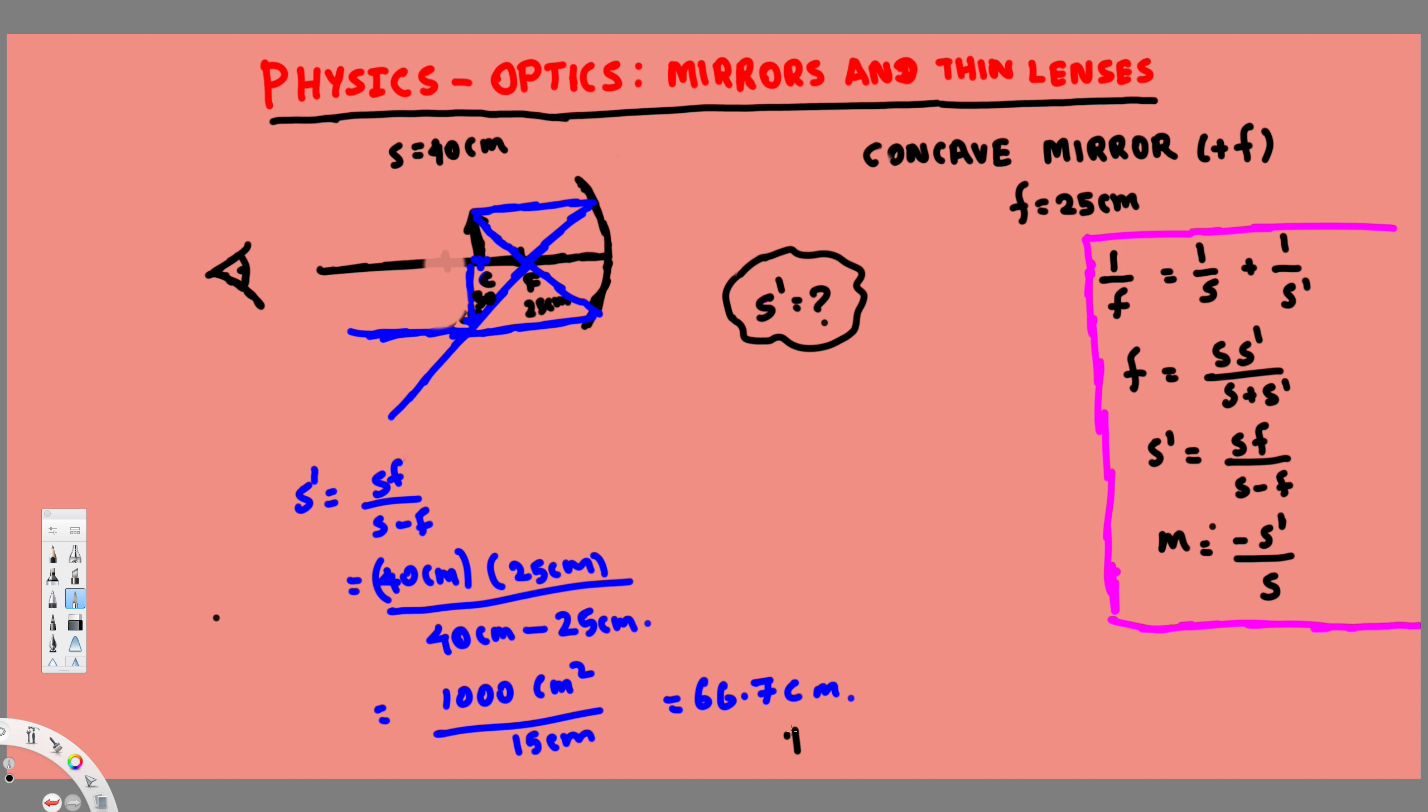Now to find whether it is inverted or not, we use this magnification equation. The magnification equation is m equals negative s prime over s. Again, s prime is the image distance that we found, so this is going to be minus 66.7 centimeters over the object distance, that is 40 centimeters.